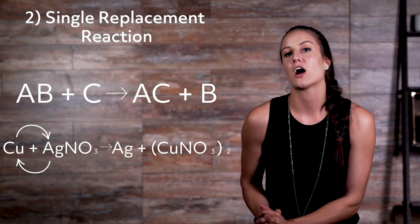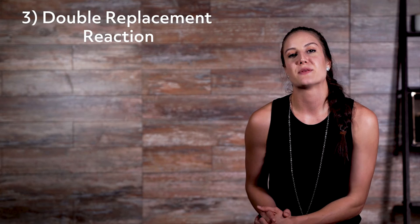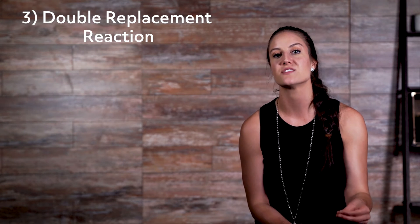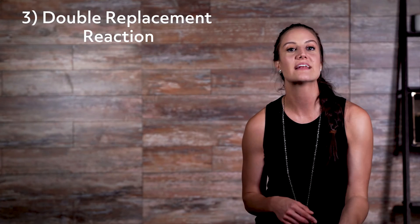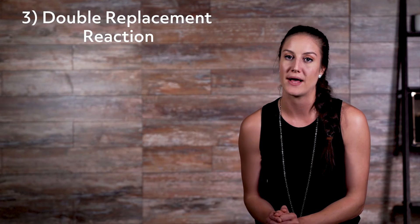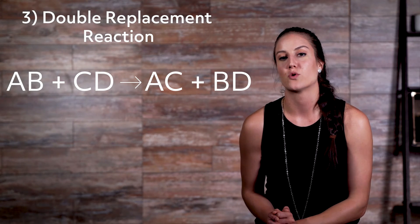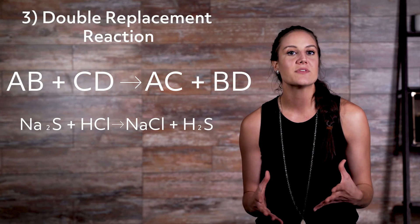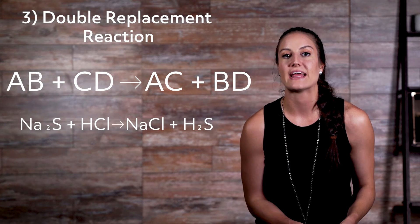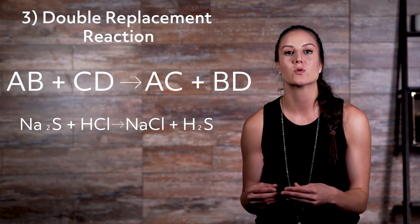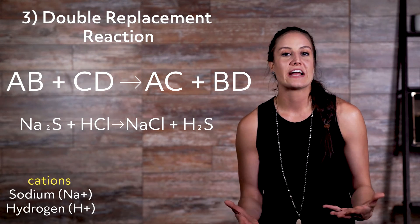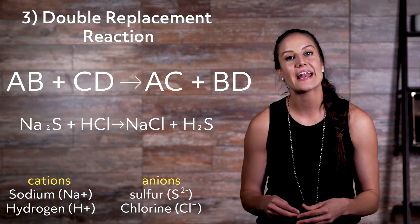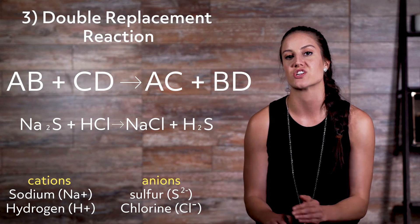An example of this is the combination of copper and silver nitrate. Double replacement reaction: this can be defined as a chemical reaction in which the ions of two compounds swap with one another within a liquid solution and configure two new compounds. The equation is: AB plus CD yields AC plus BD. An example is the combination of sodium sulfide and hydrogen chloride to produce sodium chloride and hydrogen sulfide. Sodium and hydrogen are cations, and sulfur and chlorine are anions, and the cations and anions switch places during the reaction to form new compounds.